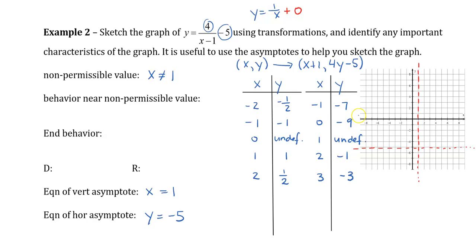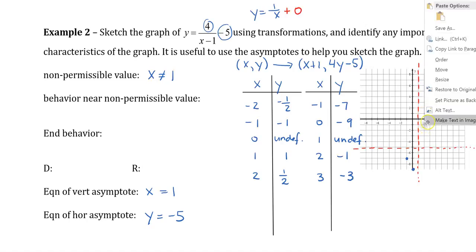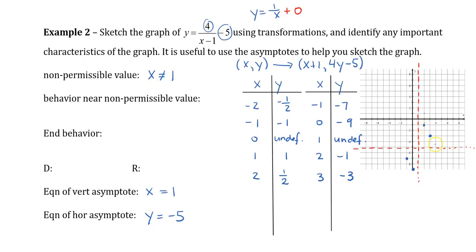I'm going to plot my four points now. So I have negative 1, negative 7, 0 and negative 9, 2 and negative 1, and 3 and negative 3. To get a few more points down here, let's just keep extending this. I'm going to go 3 and 4.